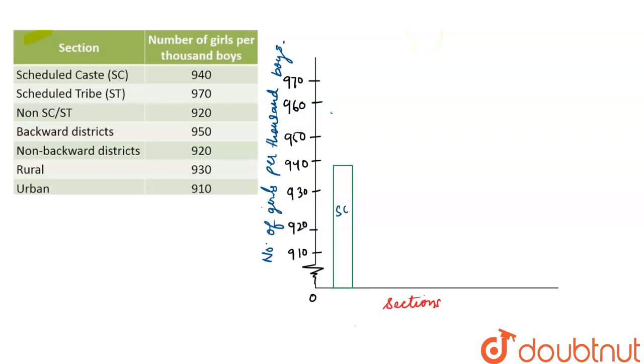And here let's make for ST. For ST we have 970, so 970 will be from here. This is for ST, and I'm writing it down here. And here we have for non-SC/ST category, that is 920. So for non-SC/ST is 920, so the graph will be from here. This is for non-SC.